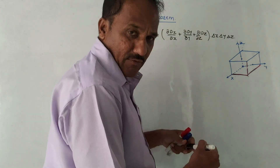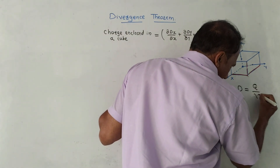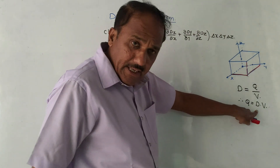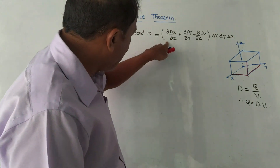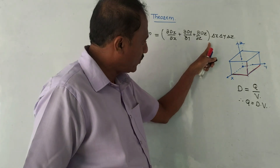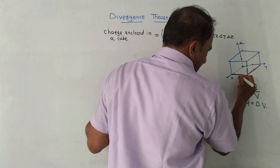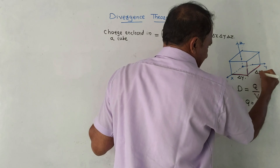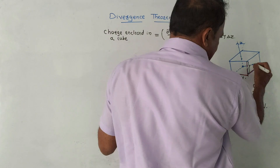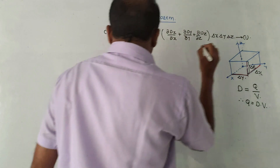Now, D is the flux density. If you want to define D, it can be written as Q/V, where Q is the total charge and V is the volume. From this, Q equals D into V. We are considering the Cartesian coordinate system. Looking at the diagram of the cube drawn in red ink: the line along the y-axis has length Δy, along the z-axis is Δz, and along the x-axis is Δx. So the volume is written as Δx Δy Δz. This is equation number one.